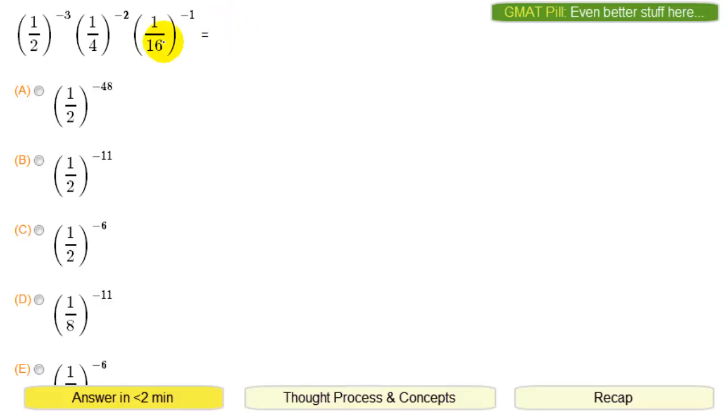Basically, you want something that looks like this: one-half to the third power times one-half to some power times one-half to some power. So this one-fourth has to become one-half to something power.